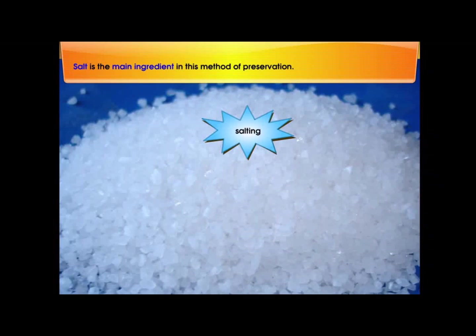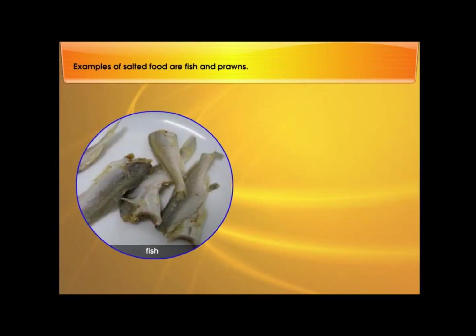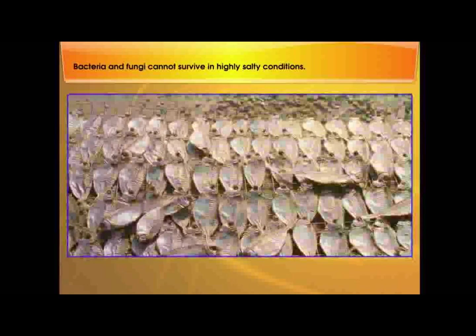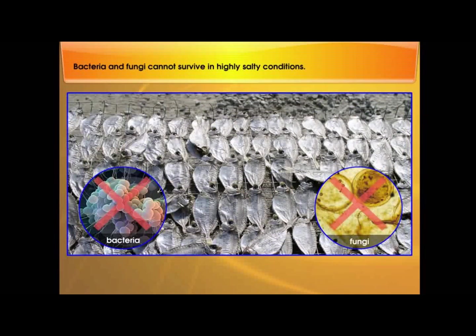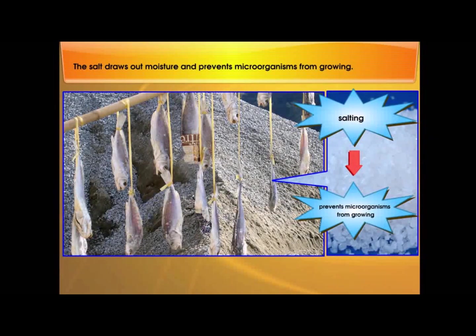Salt is the main ingredient in this method of preservation. Examples of salted food are fish and prawns. Bacteria and fungi cannot survive in highly salty conditions. Salt draws out moisture and prevents microorganisms from growing.